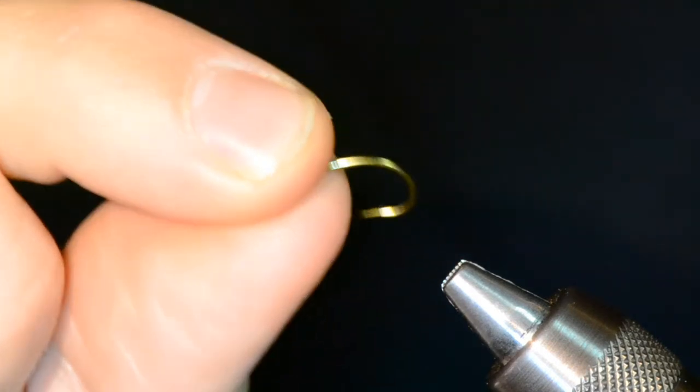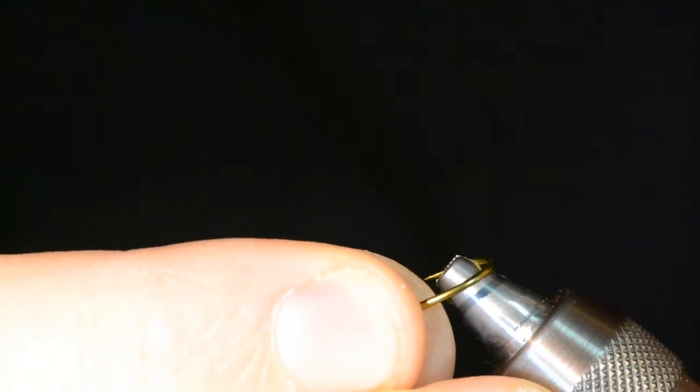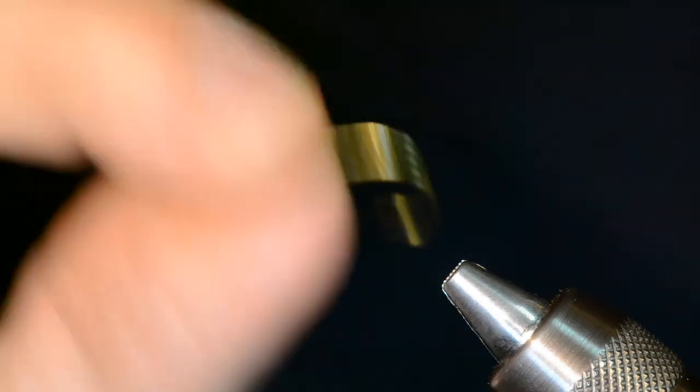So what we'll do is just use the jaws of our vise or your little pliers if you've got some handy. Don't apply a ton of tension because you might damage the jaws on your vise there, but just a little pinch and that'll smash the barb down.